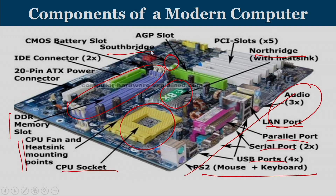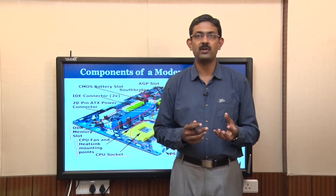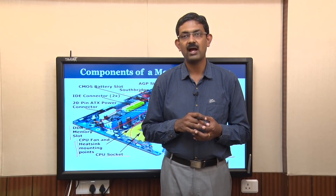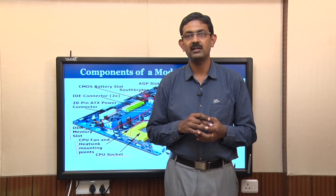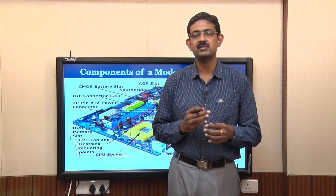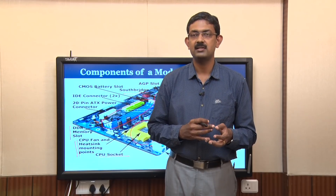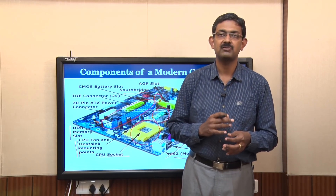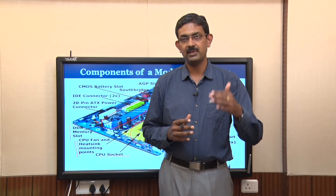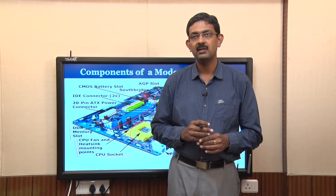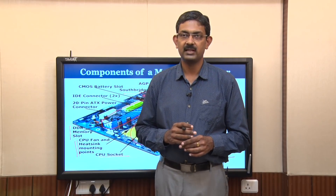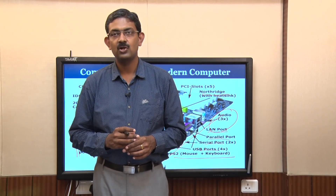North bridge and south bridge are the two connection points where high-end and low-end devices are appropriately connected. The motherboard houses the processor chip with heatsink fans, slots for connecting peripheral devices including hard disk, and separate DRAM slots where the DRAM DIMMs are kept. Two bridges appropriately connect high-end and low-end devices to the processor.